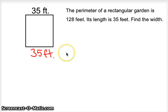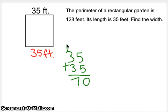Good. So going back one step, let's figure out how much we have so far. We know that if we have 35 on one side and 35 on the other, we're going to add those together, and we realize that we already have 70 feet of our perimeter. But what is our total perimeter supposed to be? 128 feet.